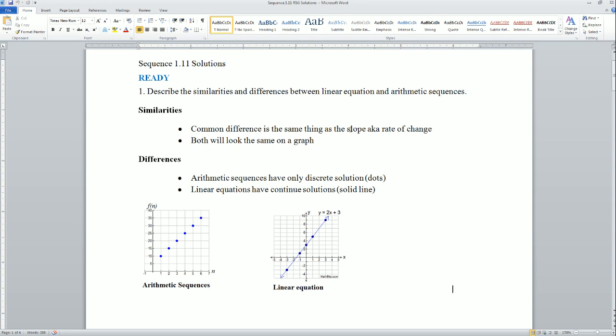They have this thing called a slope; they have the same rate of change. Next, they will look exactly the same on the same graph. They will look the same on the same graph—both going up because their slope is positive.